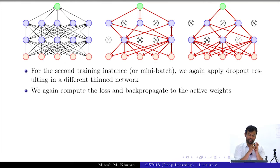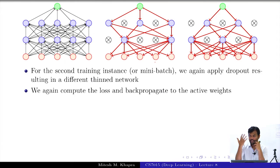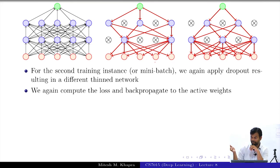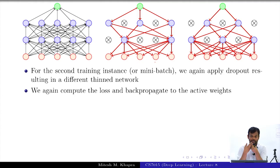What is happening here relates to bagging — we are trying to train different networks on different subsets of the training data. Each time we sample a different network and update it, so it is equivalent to training a large number of networks on different subsets of data.